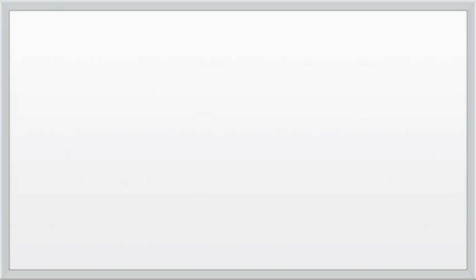The alias assigned to your network interface will also depend upon your distribution. Older distributions based on the init daemon will assign eth0 to the first Ethernet adapter in your system, eth1 to the second, eth2 to the third, eth3 to the fourth, and so on.